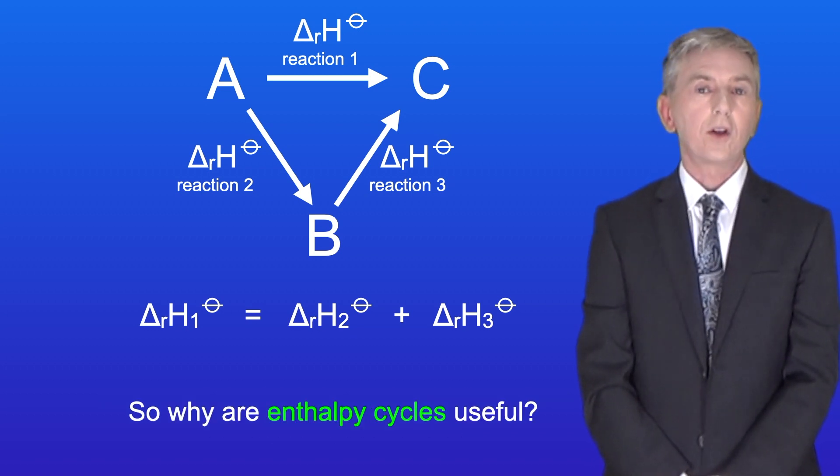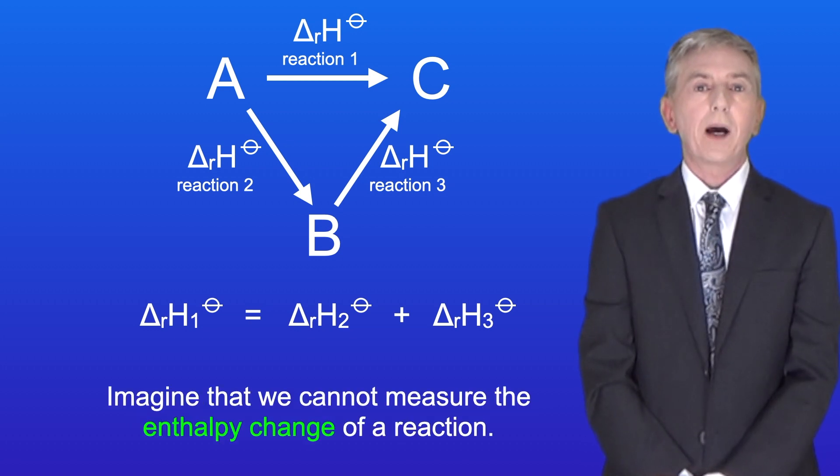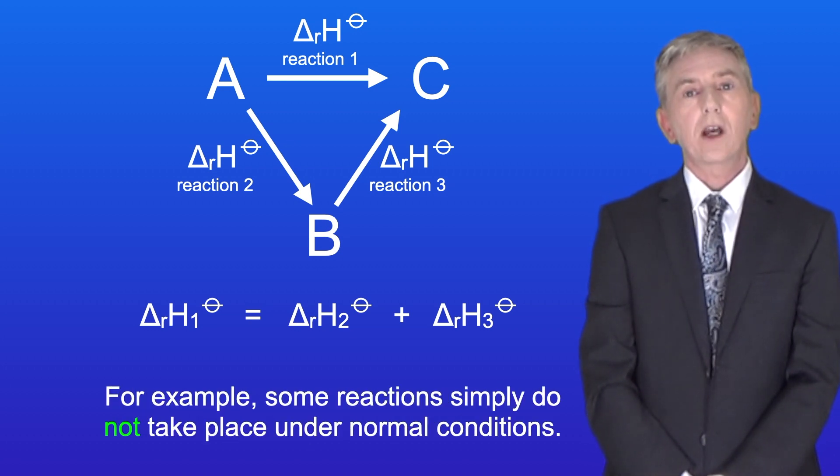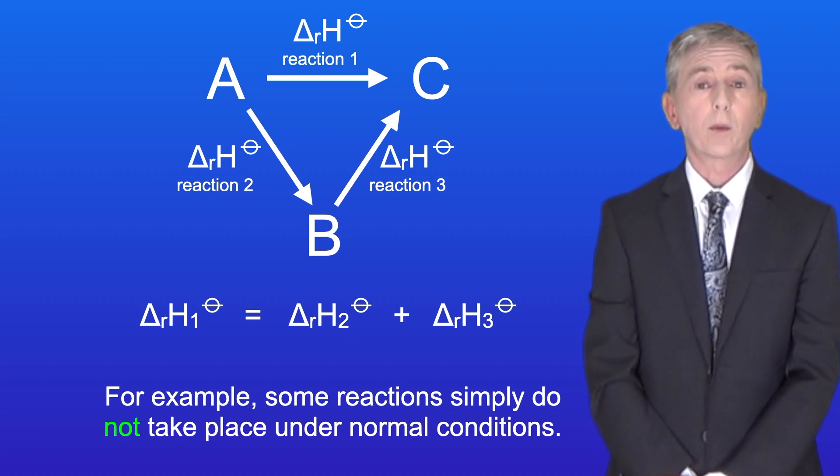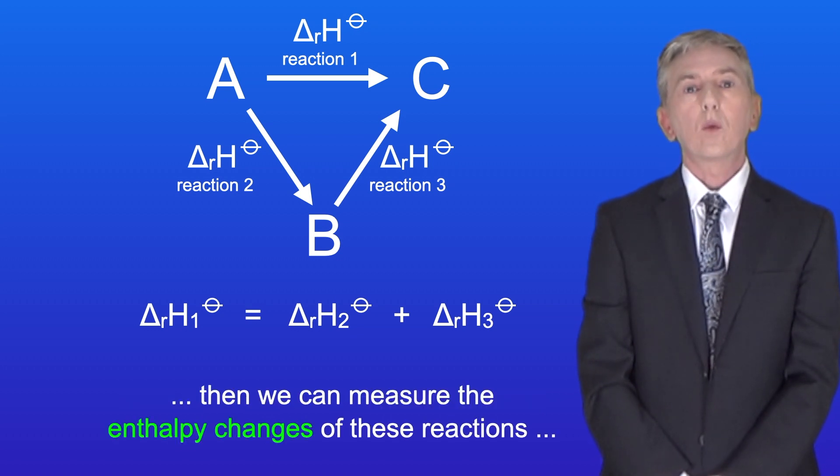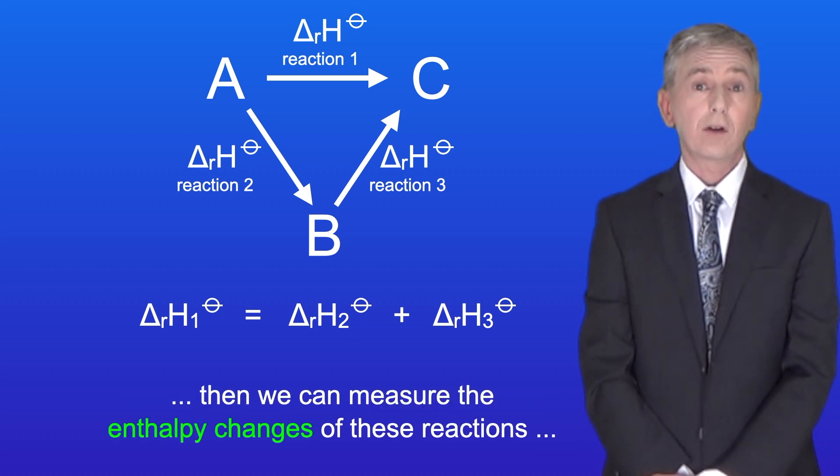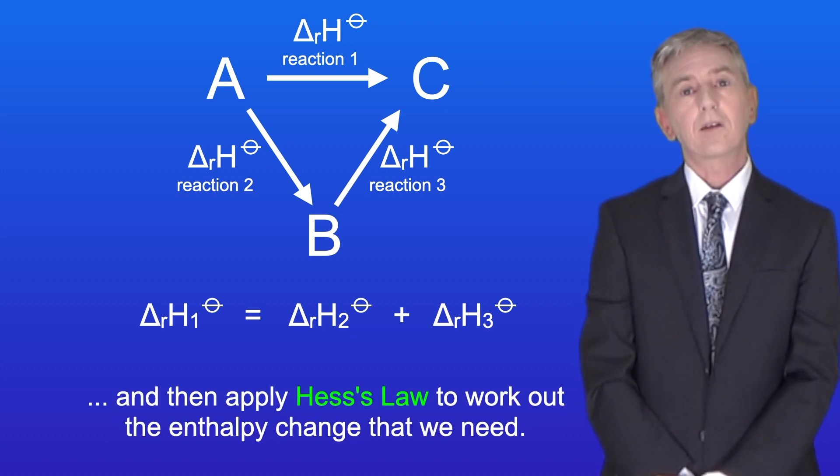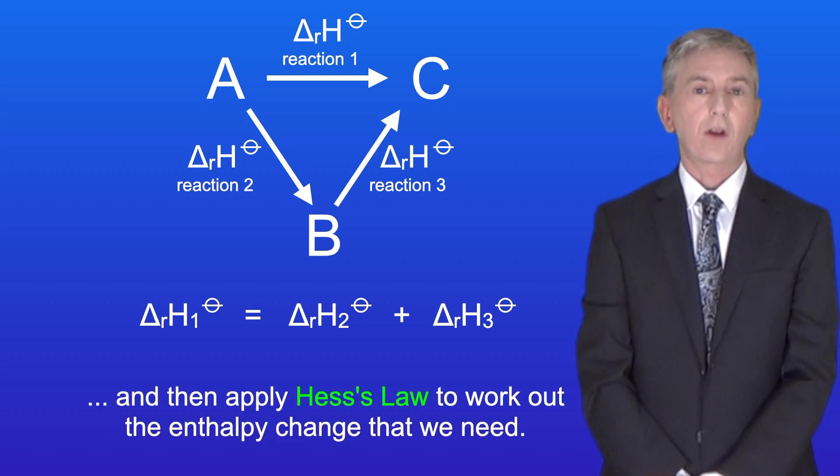So why are enthalpy cycles useful? Well imagine that we cannot measure the enthalpy change of a reaction. For example some reactions simply do not take place under normal conditions. If we can find an alternative pathway going from reactants to products, then we can measure the enthalpy changes of these reactions and then apply Hess's law to work out the enthalpy change that we need.